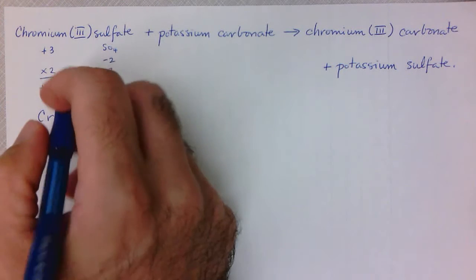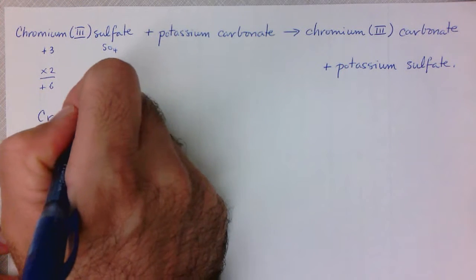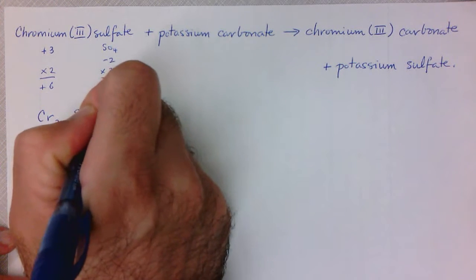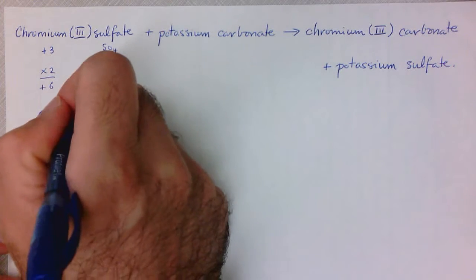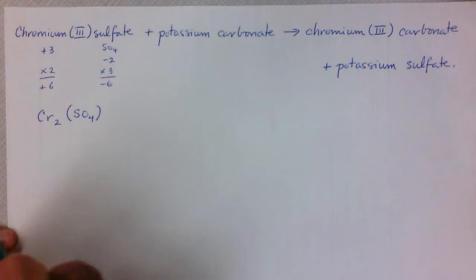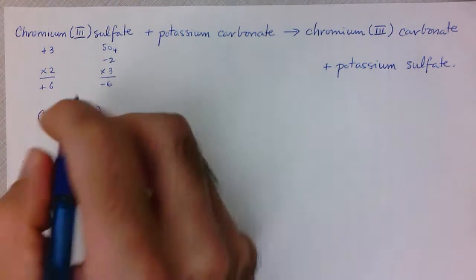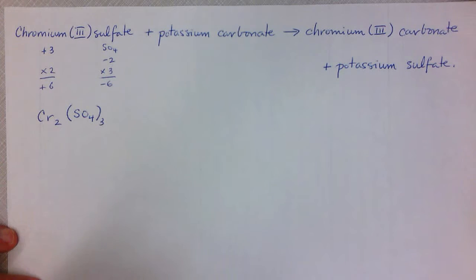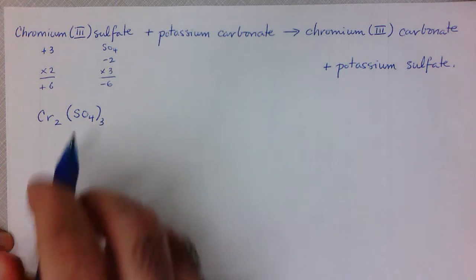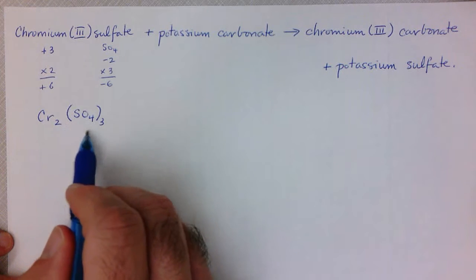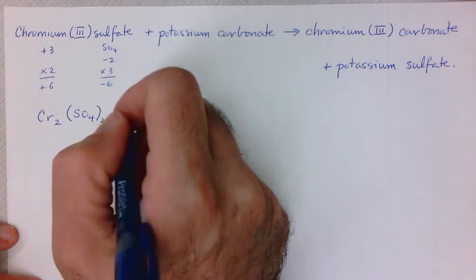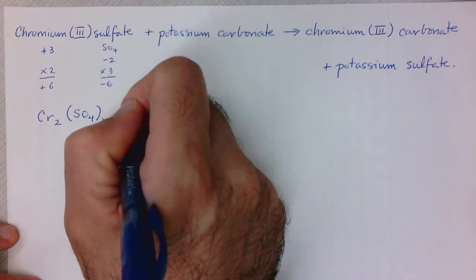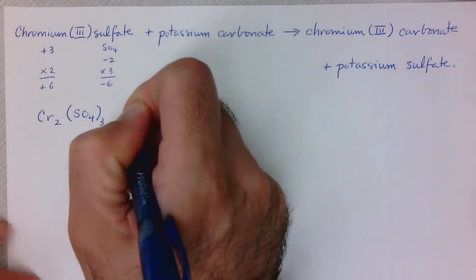Now we're ready to write our chemical formula. Chromium is Cr and we need two of them, and sulfate is SO₄ but we need three of them. So we'll put the sulfate ion in brackets and then indicate we need three of those: Cr₂(SO₄)₃. Remember that when we're balancing, we're going to treat SO₄ as a single entity.